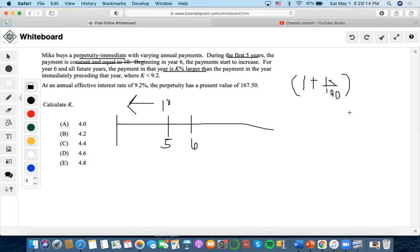From the payment of 10 at time five, and since increasing starts at six, we do 10 times (1 + 0.01k). At seven it becomes 10 times (1 + 0.01k) squared, and so on.